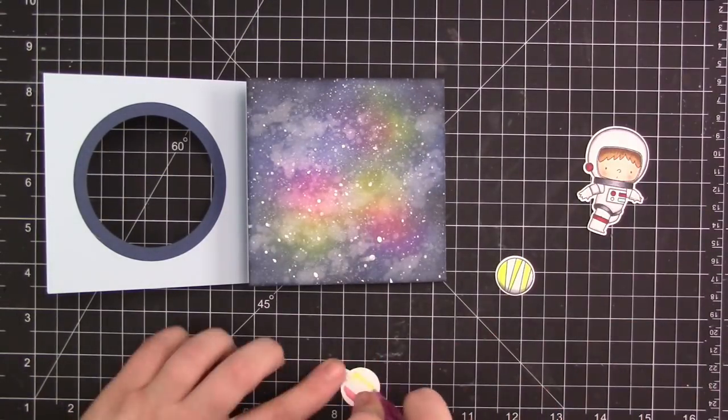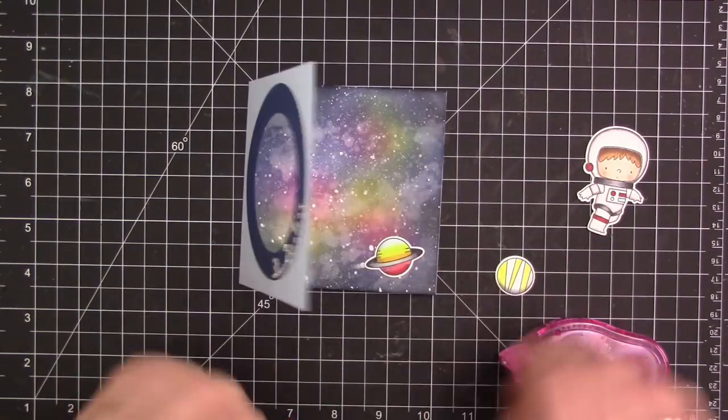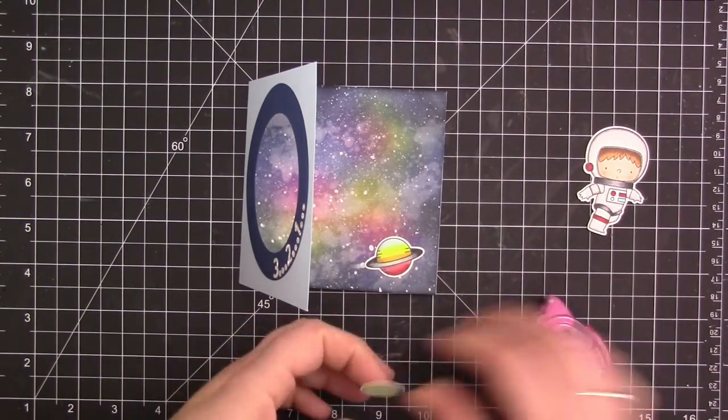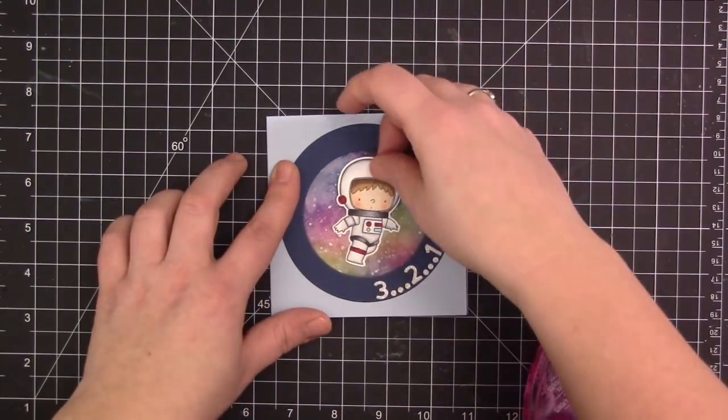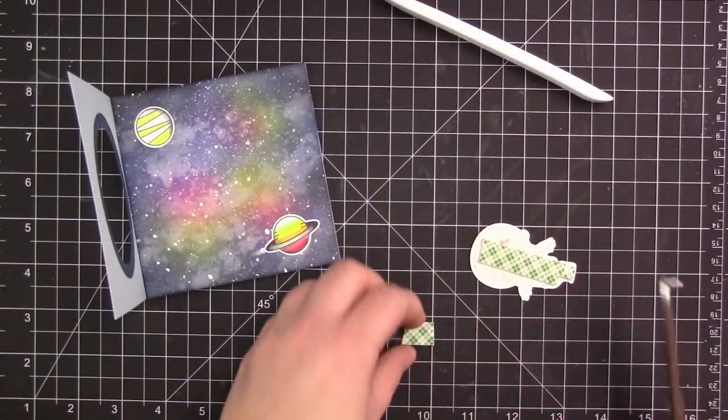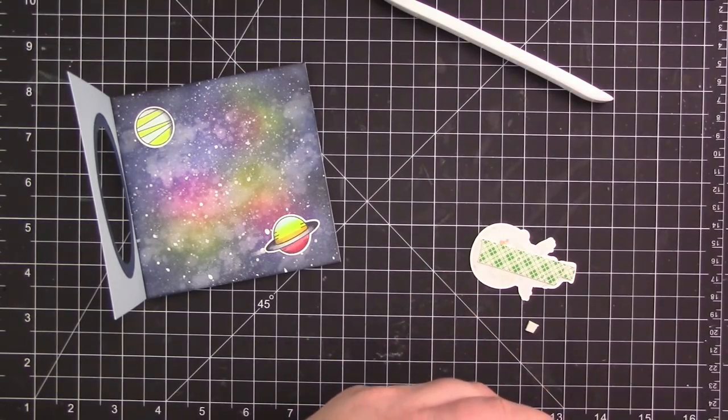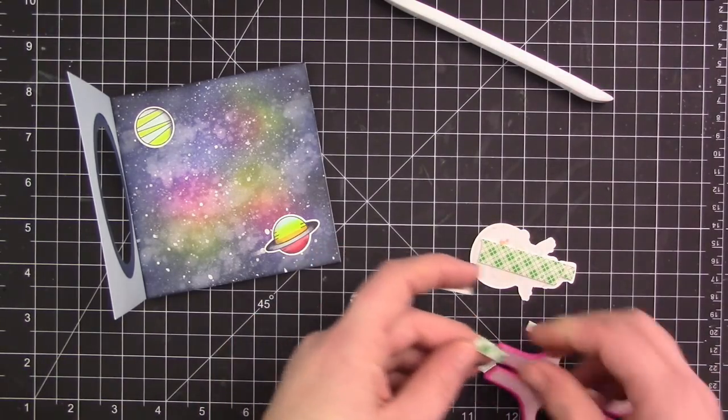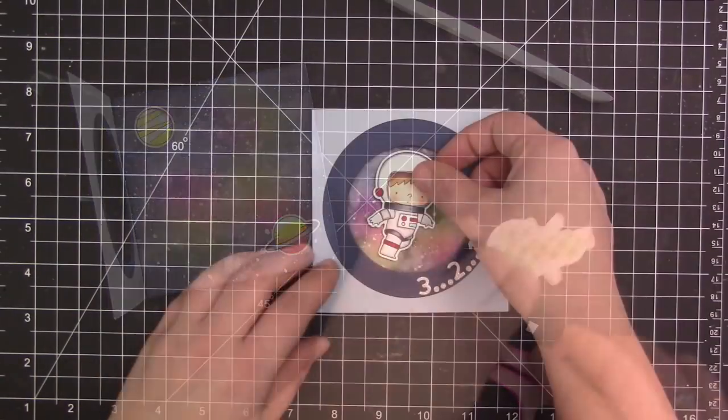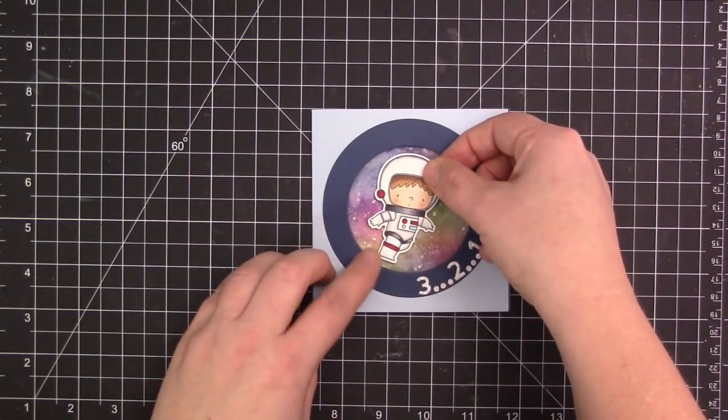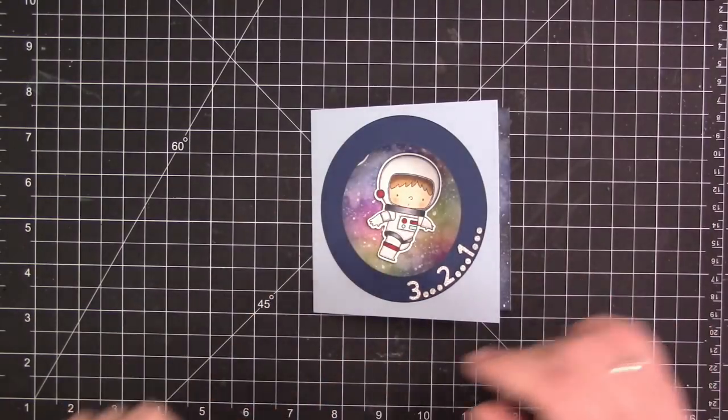So I have the two little planets that I'm adding with some regular adhesive because they are on the inside area of where the card closes. And then for the little space astronaut here we are going to use some foam adhesive because he is going to be in the circle area. So it's okay that he is going to stick up a tiny bit because he has that window area to let him be a little bit higher than the rest of the images. So we added him on and then we're going to add the string.